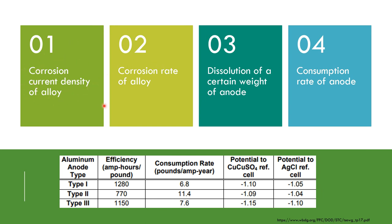We can calculate the corrosion rate in millimeters per year, meters per year, or mils per year. Such a corrosion rate can then be used to calculate the dissolution of the weight of that anode, and this can further be used to extrapolate into the consumption rate of the anode. Thus, the Tafel plot, which looks like a pure electrochemical testing method, can actually be related to the parameters given in the data sheets for the anodes.